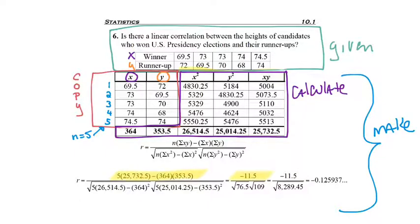First, I need N, which we said was 5. Then I'm going to multiply that with the sum of the XY column, so the 25,700 number. Subtract the sum of just X's, which is the 364 number. And multiply with the sum of Y's, the 353.5 number. So, now I've got the top of my fraction, and if you wanted to get out your calculator even now and type that all straight across, you should get negative 11.5.